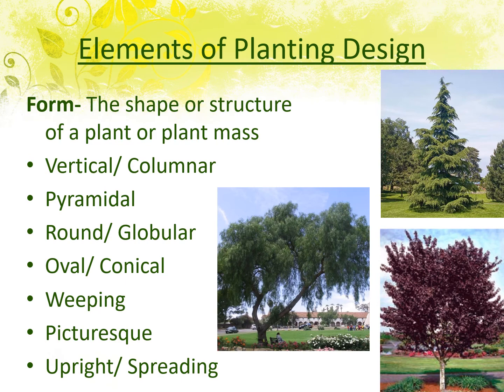Form, related to plants, refers to the shapes of plants — especially trees. We can have vertical or columnar trees like palm trees or Italian cypress, pyramidal shaped trees like cedar, round or globular shaped trees, weeping trees like the California pepper which weeps a bit like a willow, and picturesque forms like an oak tree with its irregular structure. Plants can also have upright or spreading forms, all adding interest to the landscape in addition to texture and color.